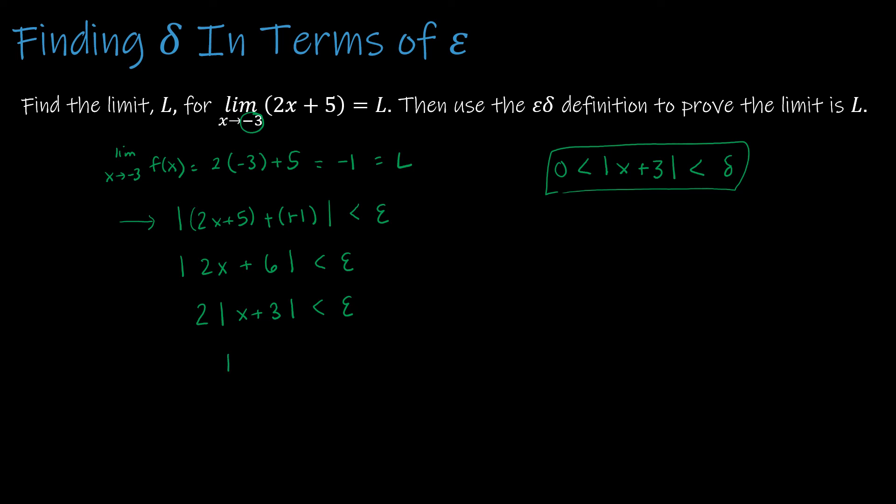So the absolute value of |x + 3| has to be less than epsilon divided by 2. So again, delta is equal to epsilon divided by 2. Now that we have a strong foundation in exactly what a limit is, let's take a look at some of the properties of limits.